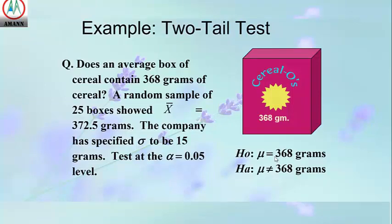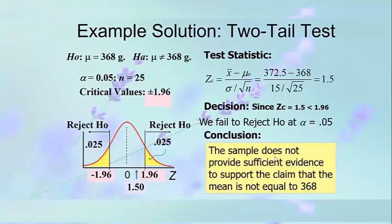Example two — two-tailed test: Does an average box of cereal contain 368 grams? A random sample of 25 boxes showed a mean of 372.5 grams. The company has specified the standard deviation to be 15 grams. Test at the alpha = 0.05 level of significance. H₀: mu = 368 grams; Hₐ: mu ≠ 368 grams, alpha = 0.05, n = 25.